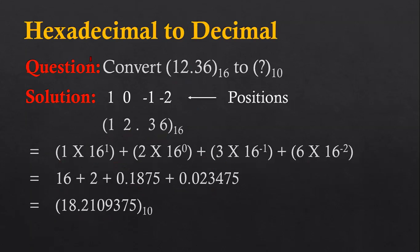Lastly, I am going to convert a hexadecimal number into a decimal number. The hexadecimal number is 12.36, and we have to convert it into decimal. The positions are identified, and then the digits are multiplied with the base value along with the corresponding power. So 1 is multiplied by 16 raised to 1, 2 is multiplied by 16 raised to 0, 3 is multiplied by 16 raised to minus 1, and 6 is multiplied by 16 raised to minus 2.